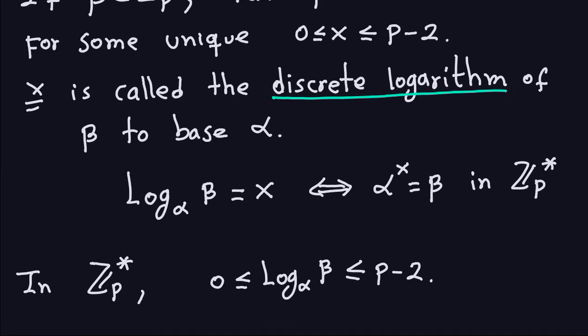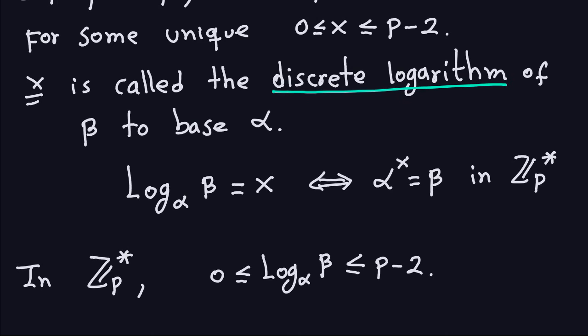So that's the definition of the discrete logarithm. This x is a whole number between zero and p-2, including both zero and p-2.